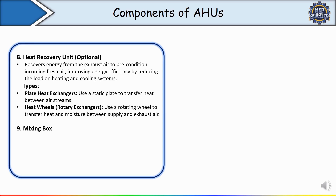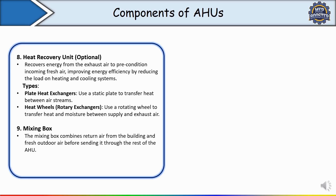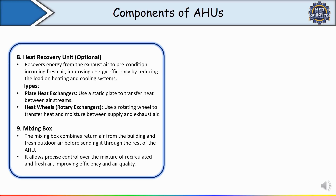The next component is the mixing box. The mixing box combines return air from the building and fresh outdoor air before sending it through the rest of the AHU. In a school building, the AHU mixing box combines warm return air from classrooms with cooler outdoor air in winter, reducing the energy needed to heat the air supply. It allows precise control over the mixture of recirculated and fresh air, improving efficiency and air quality.